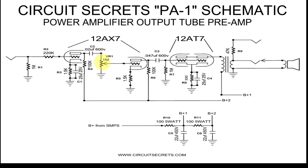VR1 is the volume control. This adjusts how much signal reaches the grid of the second stage. This component also acts as a grid leak resistor, referencing the second grid to the ground.